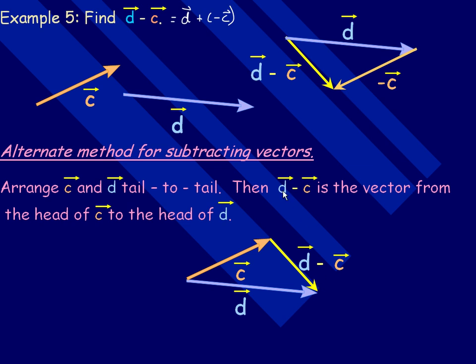So notice if it's D minus C, the vector goes from the head of the vector that's being subtracted, that's the C vector, to the head of the original, the first vector, the head of the one it subtracted from. Notice that this vector looks exactly the same as that one up there. So both methods can be used.